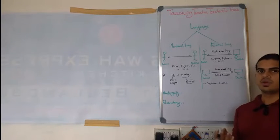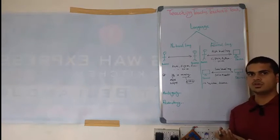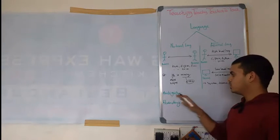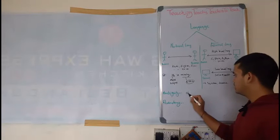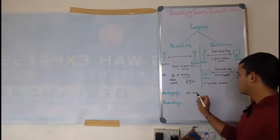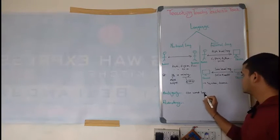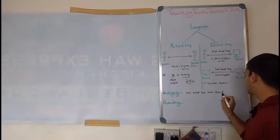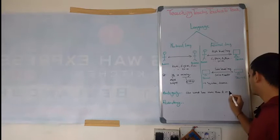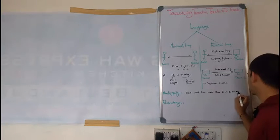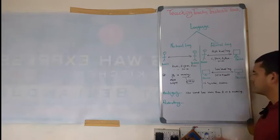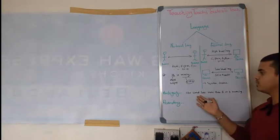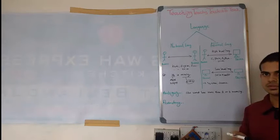Which we have to consider when we are going to make any programming language or learning: ambiguity. Ambiguity means one word has more than two or two meanings. If any word having two or more than two meanings, that means it is ambiguous.